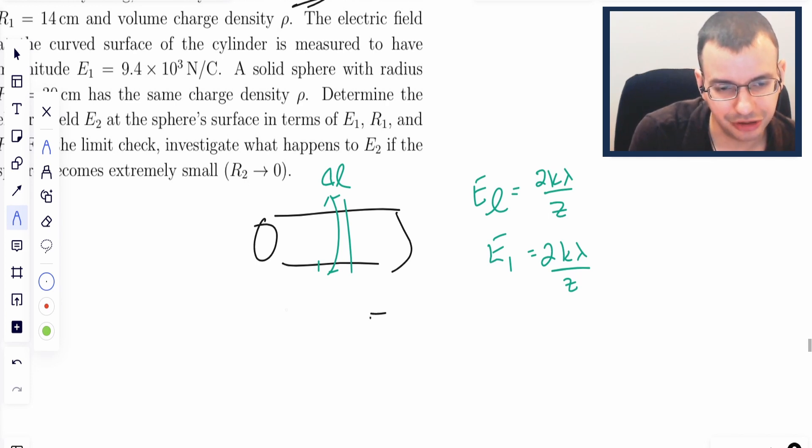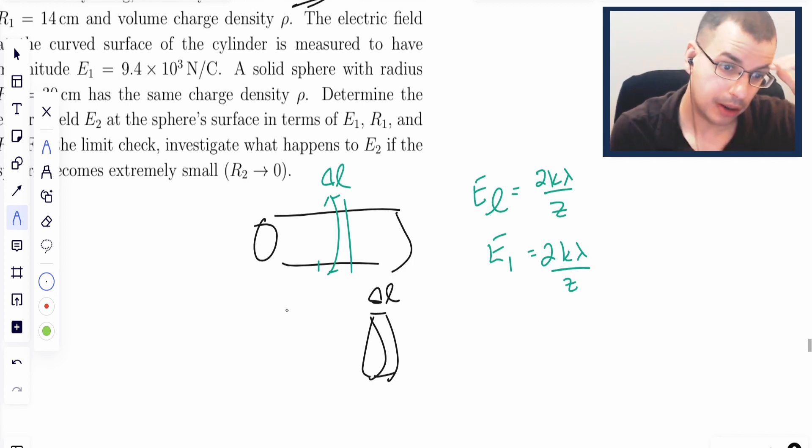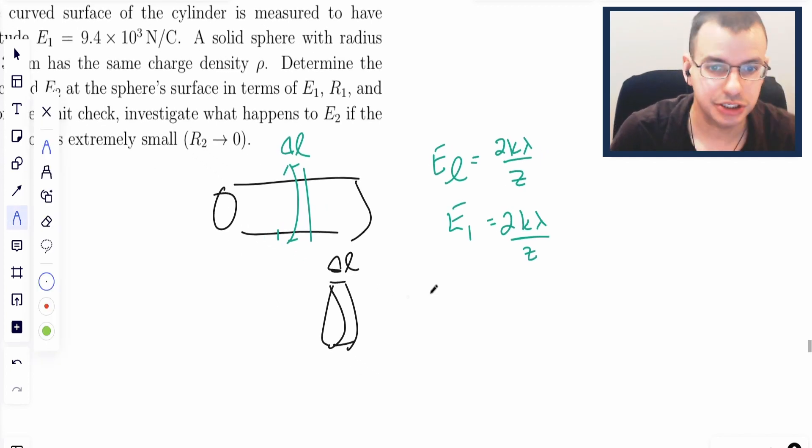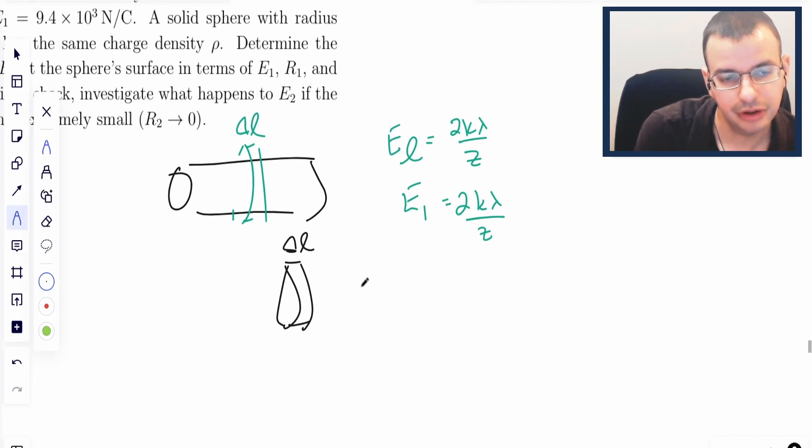I'm going to turn this delta L into a volumetric. The definition of lambda, linear charge density, is a little bit of charge for a little bit of length. The definition of rho is a little bit of charge for a little bit of volume.